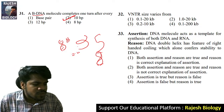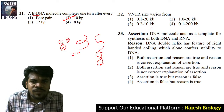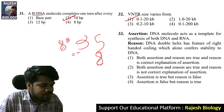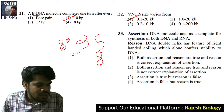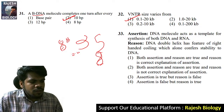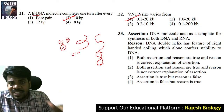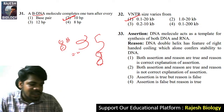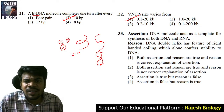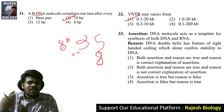Question 32: VNTR size varies from 0.1 to 20 kb. The right answer is option one. Question 33: DNA molecule acts as a template for synthesis of both DNA and RNA — correct. It acts as a template for both DNA replication and transcription of RNA.